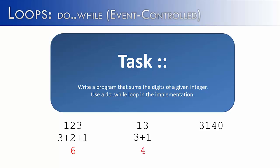If I was going to do 13, it would be 3 plus 1 is 4. And if I did 3,140, it would be 0 plus 4 plus 1 plus 3 is equal to 8. So let's see how we can do this using a do-while loop.